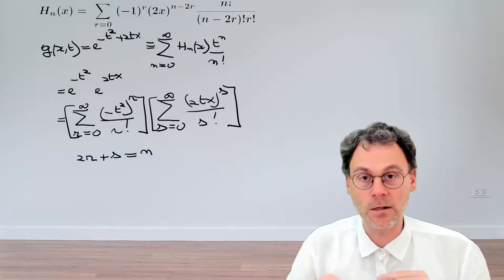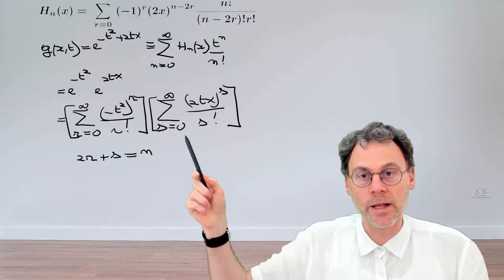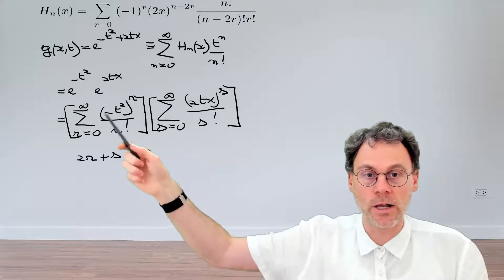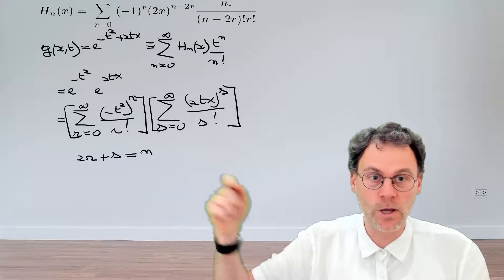So if we make that substitution, then we basically have moved from independent summation indices r and s to coupling them through this new summation variable n.